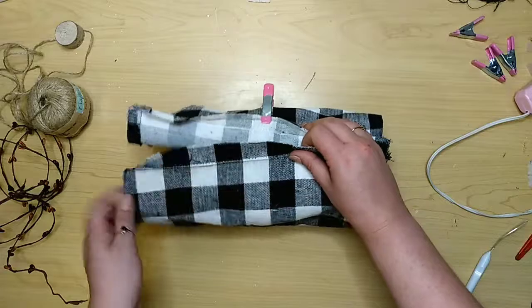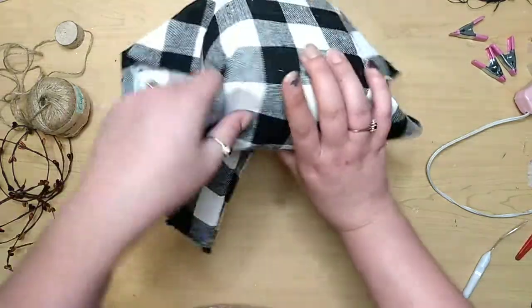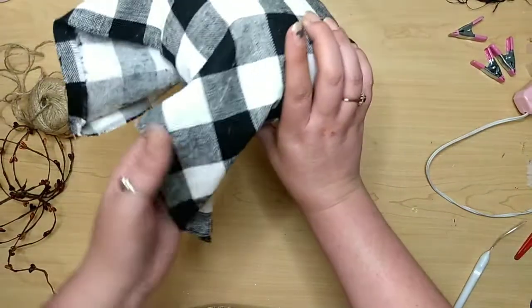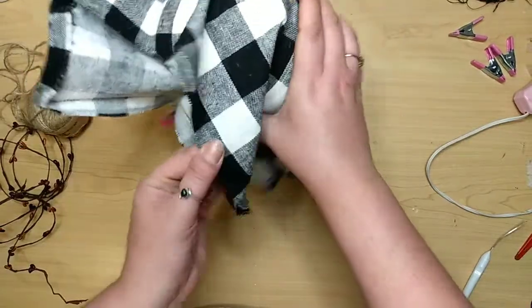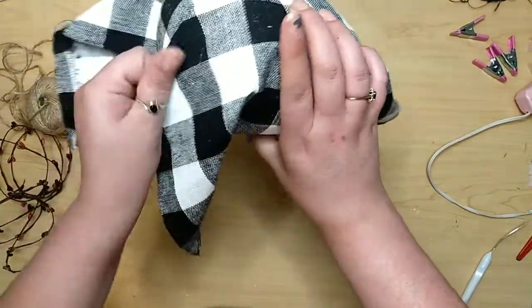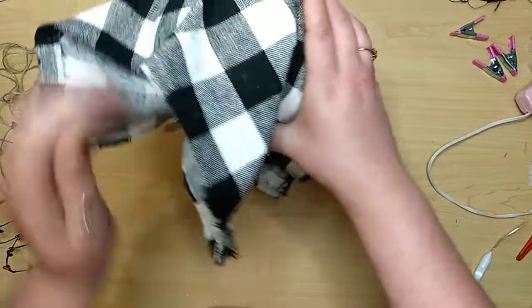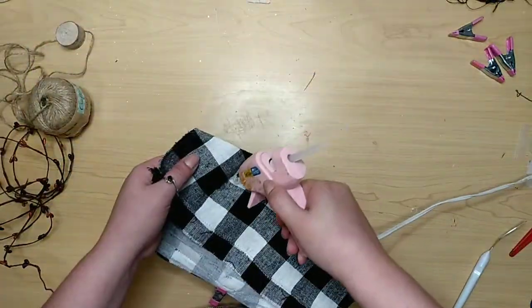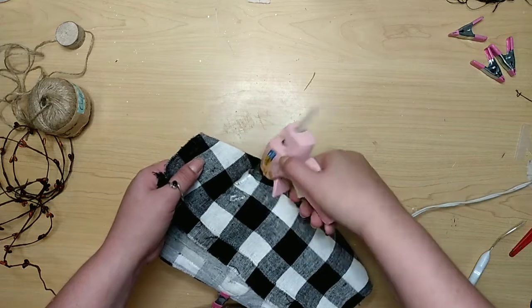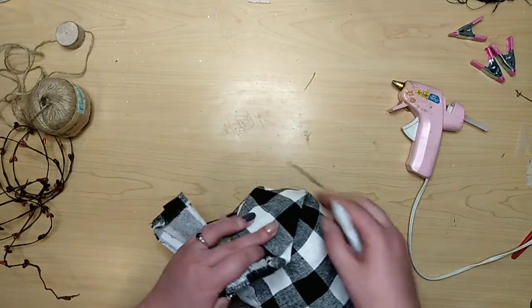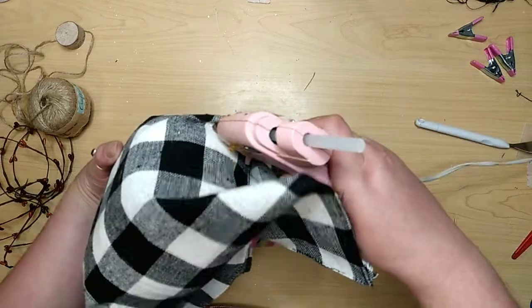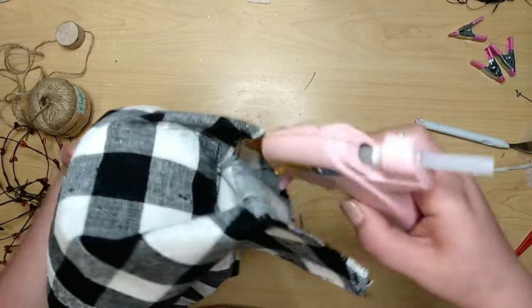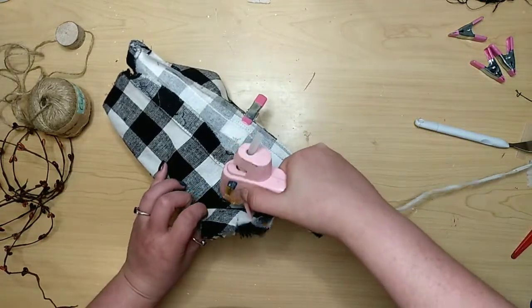Once you have all the sides glued on, we're going to take the corners. I kind of open them up so that it creates two creases instead of just the corner crease. We're gonna glue right inside that little crease on each side to fill it with hot glue, and lay it down.